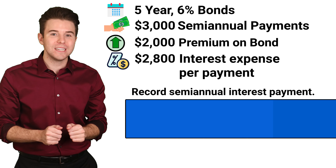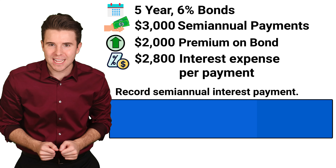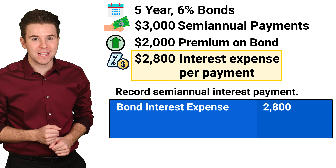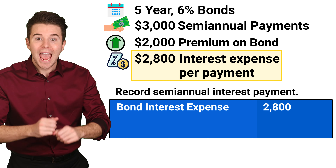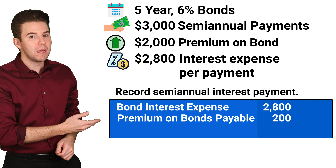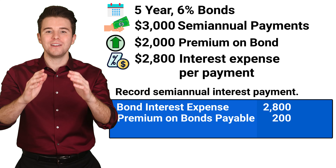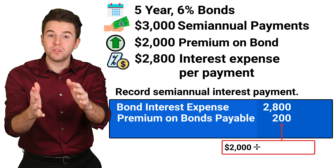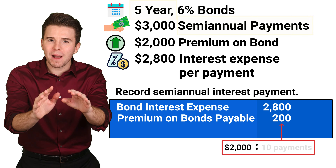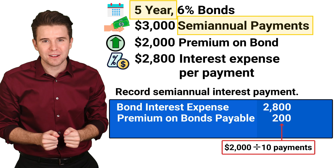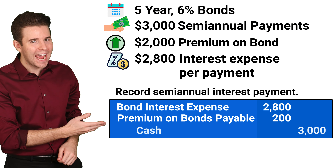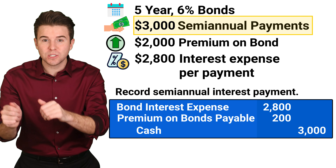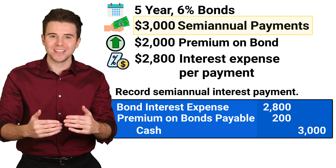To record our semi-annual interest payments and amortization, we start by debiting bond interest expense for $2,800. Next, we debit premium on bonds payable for $200 — computed as the total bond premium of $2,000 divided by 10 semi-annual payment periods. Last, we credit cash for $3,000, as this is the semi-annual cash interest payment we computed earlier.